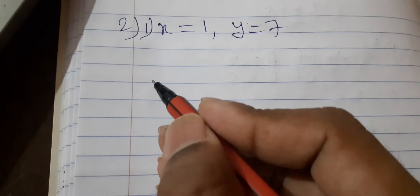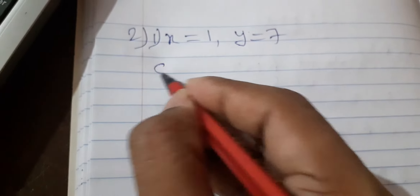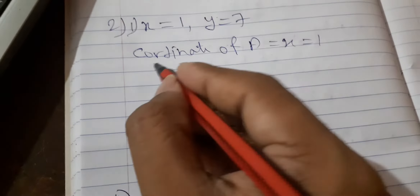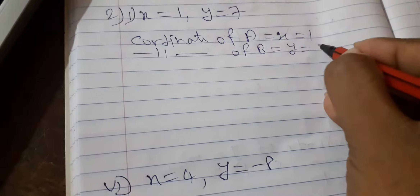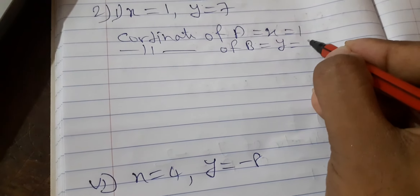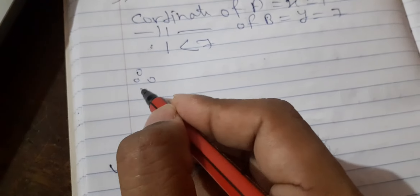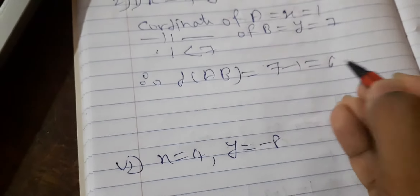First question: X is equal to 1, Y is equal to 7. Since 1 is smaller and 7 is greater, coordinate of A is equal to X is equal to 1, and coordinate of B is equal to Y is equal to 7. Distance AB is equal to 7 minus 1, which is equal to 6. Is this clear?